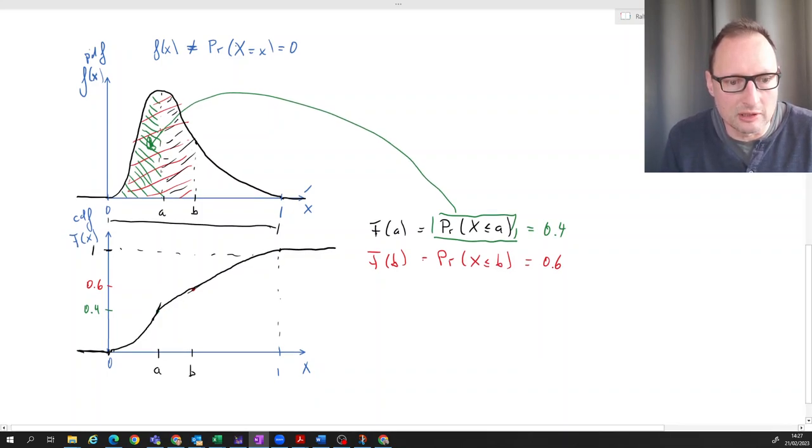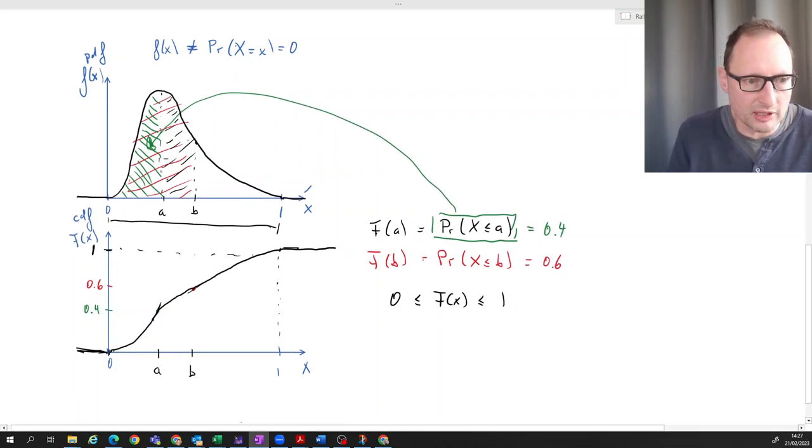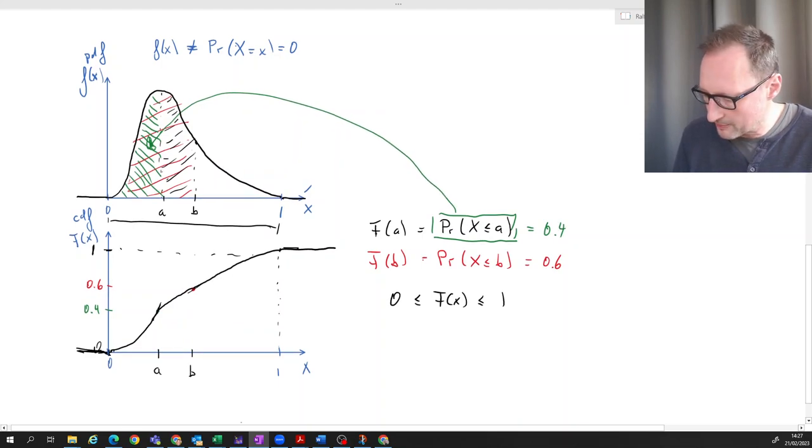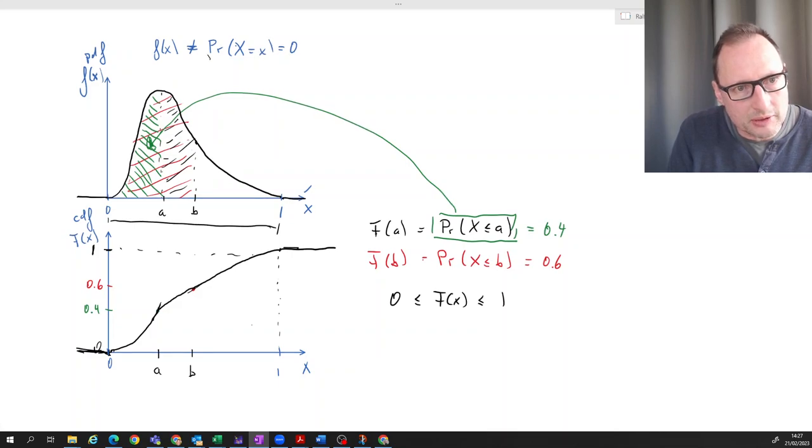And to the right of the sample space, it's going to be one. To the left, it's going to be zero. So there are a few properties of the CDF that arise from this combination of properties. Firstly, the CDF is going to be in the interval zero and one, so it never gets larger than one and never lower than zero. And as we know, the probability for an individual value is zero. That implies actually that the CDF is smooth.